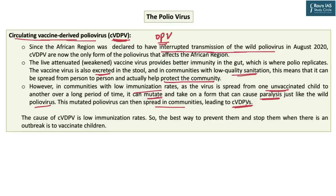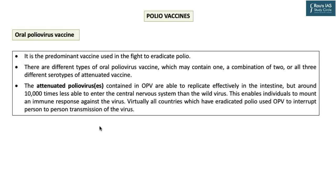The best way to prevent circulating vaccine-derived polio virus and stop outbreaks is to vaccinate children. The polio vaccine protects children whether the kind of polio is wild polio virus or vaccine-derived. Outbreaks are usually rapidly stopped with 2-3 rounds of high-quality supplementary immunization activities. There are two kinds of vaccines for polio. The most predominant is oral polio vaccine, which may contain one, two, or all three serotypes of attenuated vaccine. Attenuated vaccines contain live virus that has been deactivated through heating, irradiation, or chemical stressors, but they are still live and can replicate in the intestine. They are around 10,000 times less able to enter the central nervous system — their infectivity is attenuated.